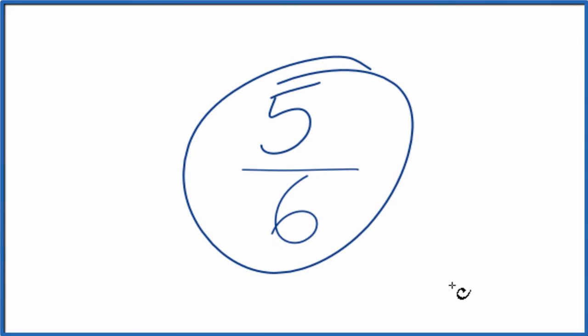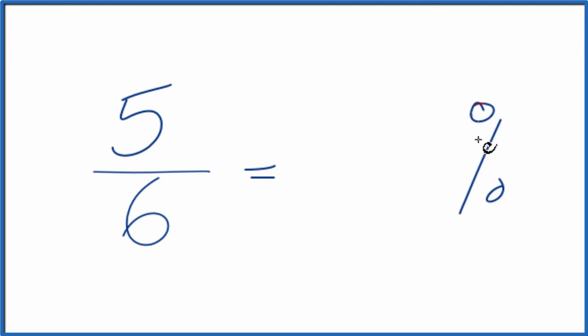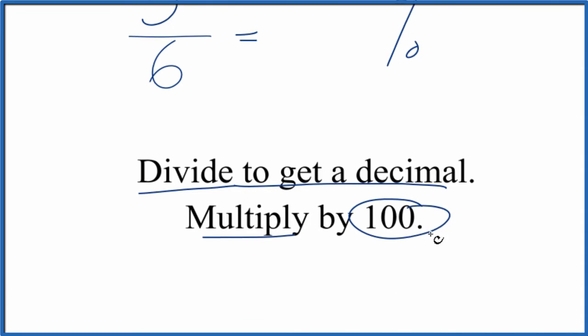Let's convert 5/6 to a decimal. So what we want to know is 5 is what percent of 6? The way we can do that, we can divide 5 by 6. That'll give us a decimal. Then we multiply that decimal by 100, and we have our percent.